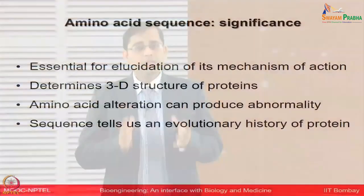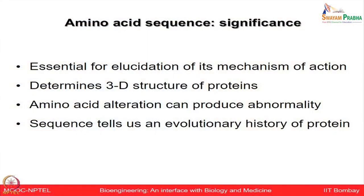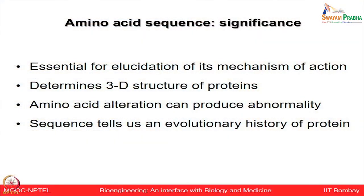The first primary structure to be deduced was for insulin, discovered by scientist Frederick Sanger. The significance of the primary structure is that it is essential for elucidating the mechanism of action of the protein, and it determines the three-dimensional structure. Amino acid alterations can produce certain abnormalities — for example, sickle cell anemia, in which a single amino acid change leads to an abnormality. The sequence also tells us the evolutionary history of the protein, and evolutionary relationships among organisms can be established by comparing amino acid sequences.